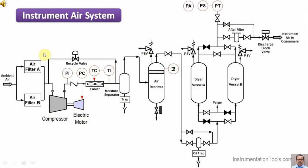Here we can see the intake for the ambient air — this we call the Air Intake. The air passes through either filter A or filter B. When filter A is in service, filter B is in maintenance or ready mode. Out of the two filters, only one filter will be in service. Here we are having the Air Intake and the Intake Air Filter.